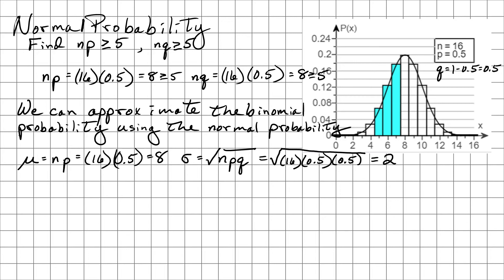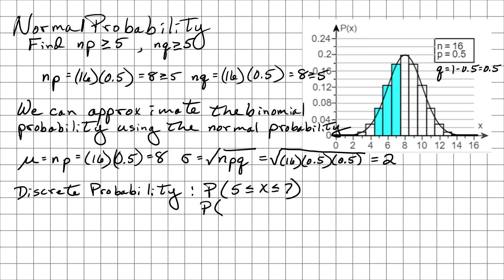So now we need to understand if we need to use the continuity correction. The first thing we want to do is write this as a discrete probability, and it's the exact same thing we started with: the probability of 5 ≤ x ≤ 7. Which means that if we're going to use the continuity correction, we're actually going to write this as the probability of 4.5 ≤ x ≤ 7.5, so that way we get around those endpoints.